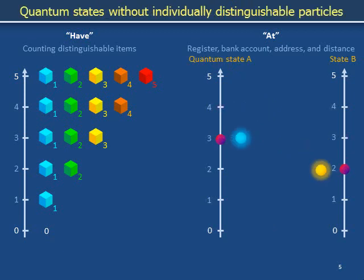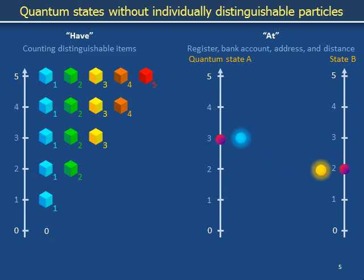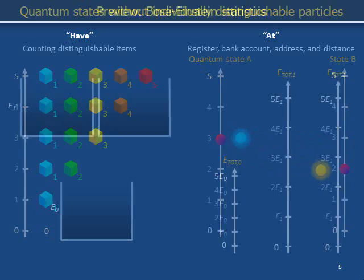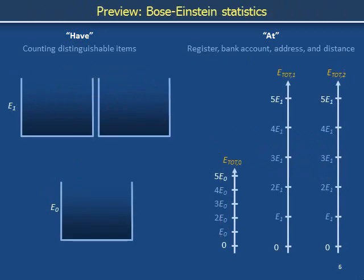In some situations, it is important to describe populations of some atoms and some subatomic particles in the way we have just described account balances. Exchanging the third atom in quantum state A with the second atom in quantum state B doesn't do anything. There is no 'the third atom' in state A. There is no 'the second atom' in state B. This seemingly philosophical subtlety has consequence for calculating the statistical properties of collections of particles.